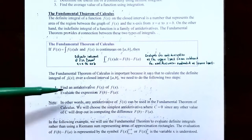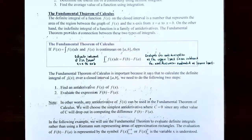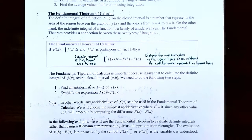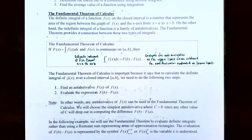Notice that we use the phrase 'an antiderivative.' It does not matter what antiderivative you find to use for the Fundamental Theorem of Calculus — you can use any antiderivative. We can choose the simplest antiderivative where c equals zero, since any value of c drops out when we compute F(b) minus F(a): F(b) gives a plus c, but then you subtract F(a) which also has plus c, so c minus c is zero. We can just use the antiderivative where c equals zero.